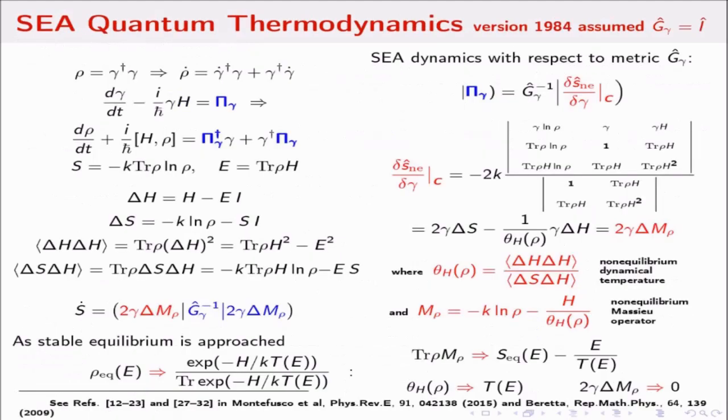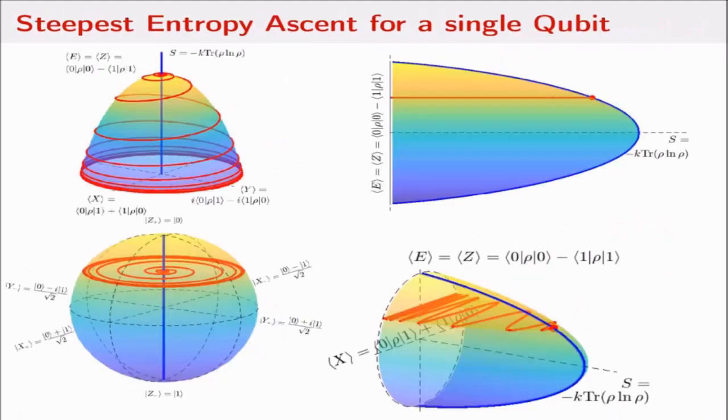Then the problem becomes Lagrange multiplier optimization and simple mathematics. Here's the result of applying that idea: you get spiraling motion towards equilibrium. This motion can be viewed in various ways. On this diagonal, it's just moving from here to there.